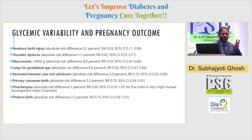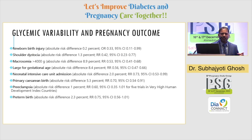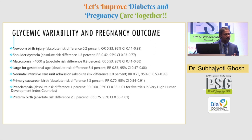Think about situations like diabetic and pre-diabetic women going into pregnancy — they have gestational diabetes. So what can this link to? Newborn injury, shoulder dystocia, macrosomia, large for gestational age, neonatal ICU care. I'm not going into the figures, I'm just talking about the complications.